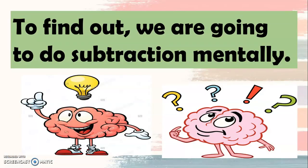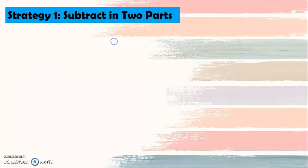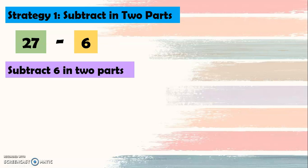And to find out, we are going to do subtraction mentally. To start, we will have strategy one, which is subtract in two parts. So we have 27 minus 6. We're going to subtract 6 in two parts. We're going to think about two numbers that when we add them, we will make the sum of 6. For this example, we have 27 minus 4 minus 2, because 4 plus 2 equals 6.